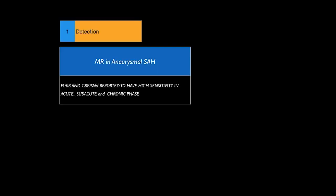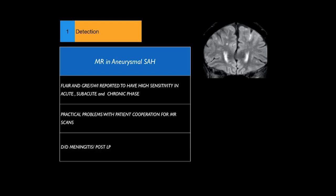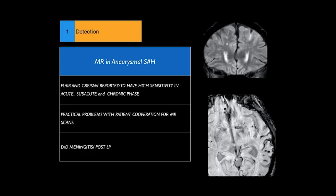Regarding MRI, FLAIR, gradient echo, and susceptibility weighted imaging have been reported to have high sensitivity in the acute, subacute, and chronic phases, but do not appear as sensitive during the hyperacute phase. There are practical problems with patient cooperation, and it is difficult to differentiate from meningitis or increased CSF signal along subarachnoid spaces following lumbar puncture. Typical MR appearances include high signal within the superior sulcal gyri on FLAIR and low signal on SWI along sulcal spaces.